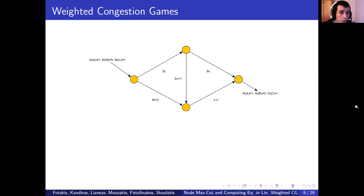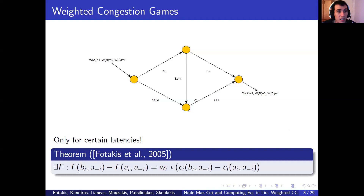A significant generalization of the previous model which has been investigated extensively is that of weighted congestion games. In this setting, the players each have a different weight with which they contribute to the latency function of each resource. Each player can have their own weight, and there is a latency function on each resource or edge in a network congestion game, which determines, based on the sum of the weights of the players using that resource, the latency of that edge. However, in this case it is not clear that the global potential exists. For general functions, such a potential does not necessarily exist. However, for certain latency functions such as linear functions of the form A times X plus B, a potential can be defined.